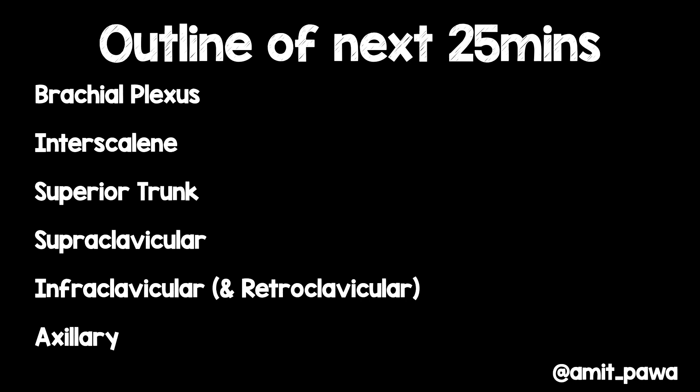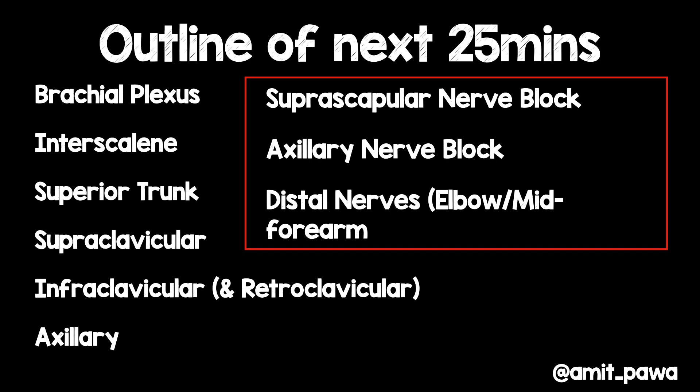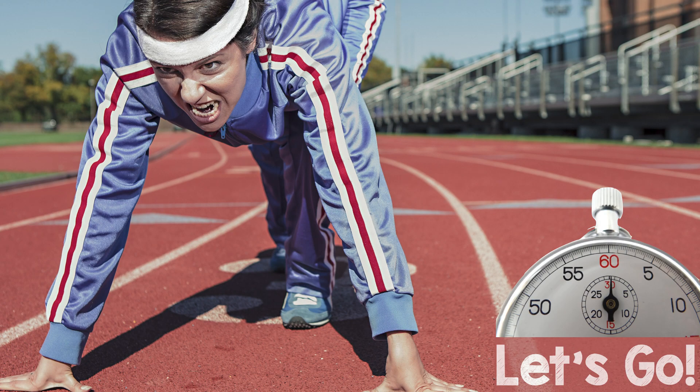So what do I aim to highlight over the next 25 minutes? We're going to talk about the brachial plexus, but specifically look at the interscalene brachial plexus, the superior trunk, the supraclavicular brachial plexus, the infraclavicular with a shout out to the retroclavicular block, and the axillary brachial plexus. And then to tie it all together, I'm also going to mention the suprascapular nerve block, the axillary nerve block, and the distal nerves of the elbow and mid-forearm.